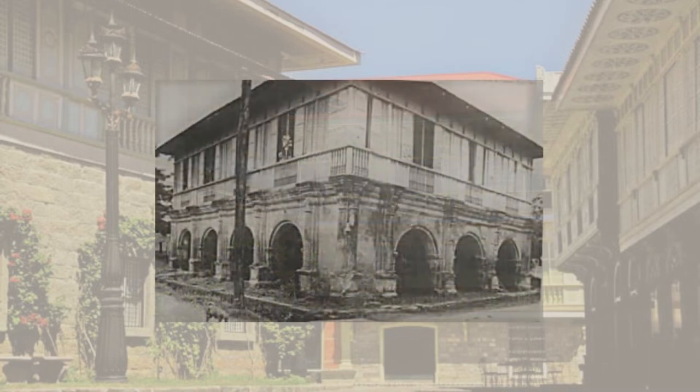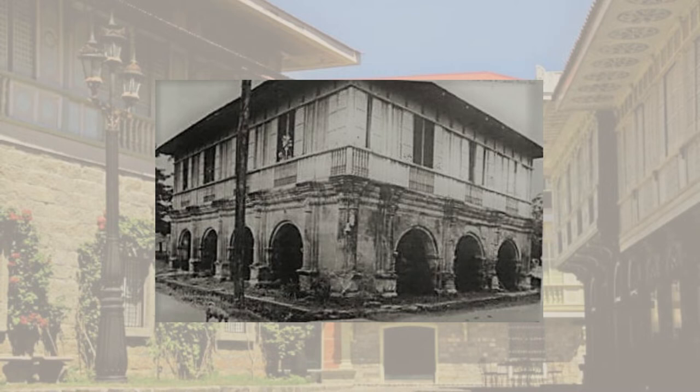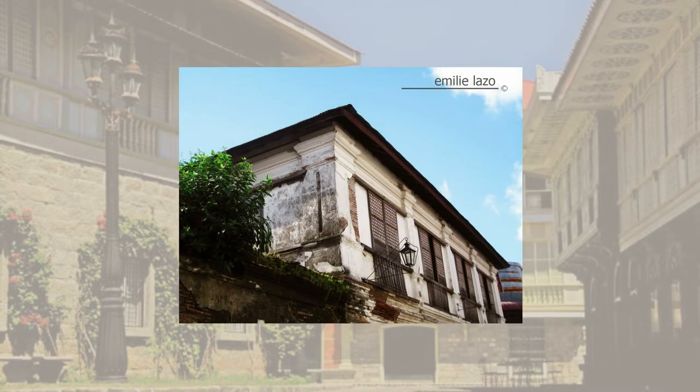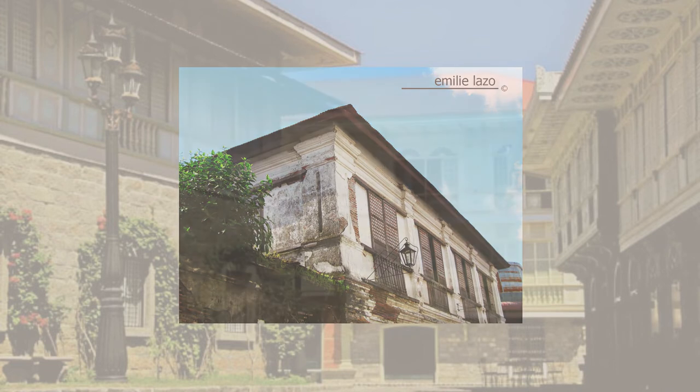The Bahay na Bato is intended to be more earthquake-proof, more translucent, more ventilated, having a raised floor against floods, addition of the media agua for rain and heat protection, raised ceiling, open spaces, and larger openings. The houses are strategically oriented based on solar activity and wind patterns of the Habagat and the Amihan.